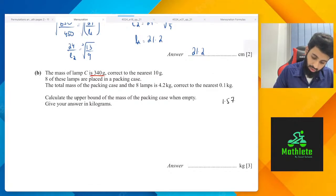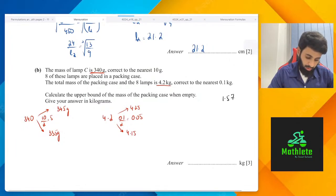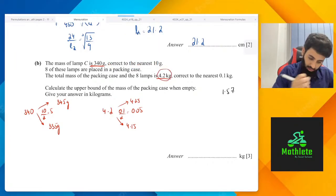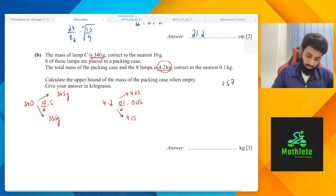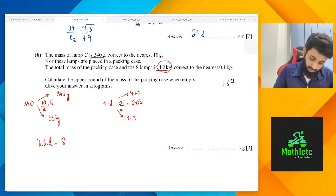We need the upper bound of the mass of the packing case when empty. Now let's see how it will be. First of all we have to work out both upper and lower bounds. 340 grams correct to the nearest 10 grams, so 345 would be the upper bound and 335 grams would be the lower bound. Let's do the same for this also. 4.2 kg correct to the nearest 0.1 kg, so divide by 2, that's 0.05. So 4.25 is the upper bound and 4.15 is the lower bound.